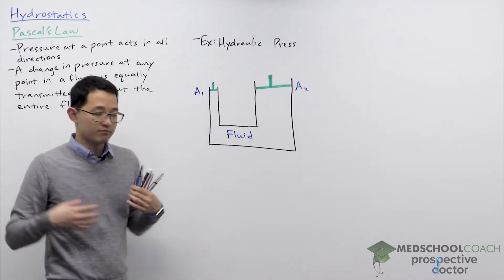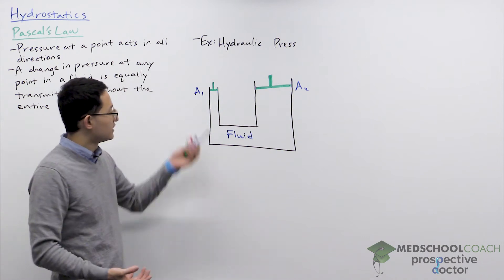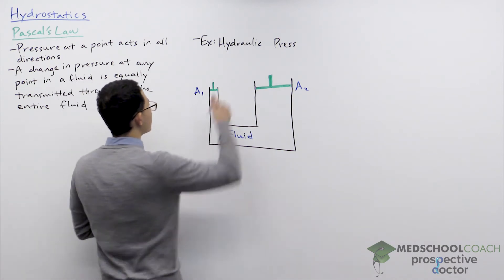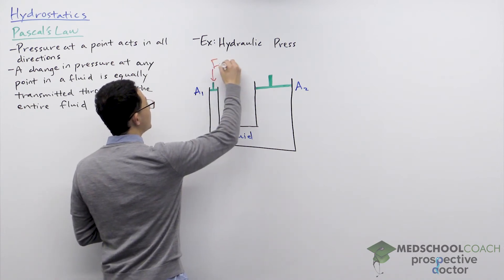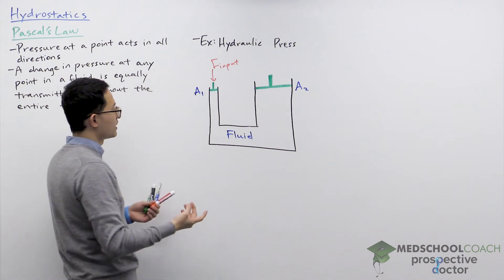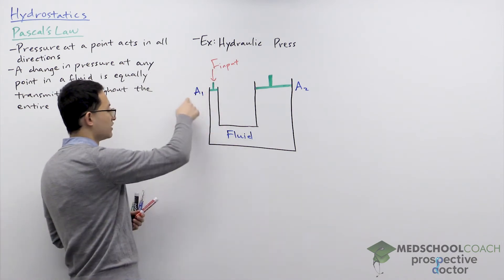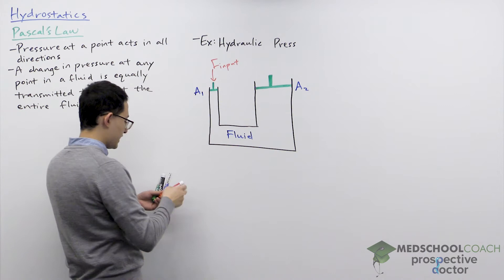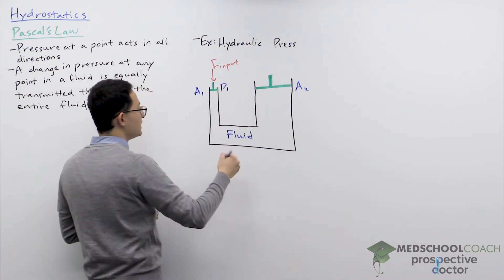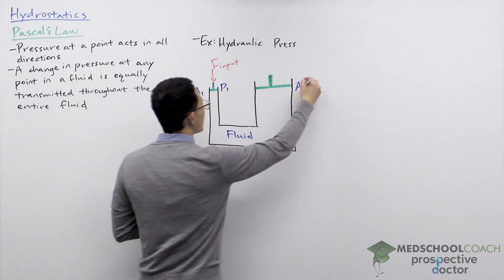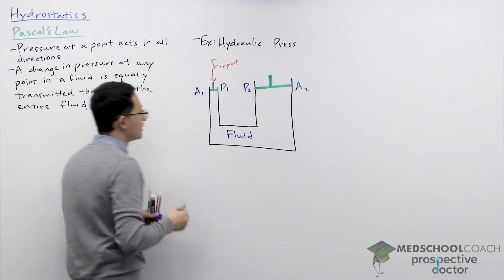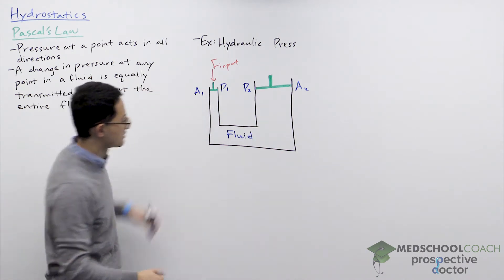And by Pascal's law the pressure is equally transmitted. So when someone essentially applies a force, so here is going to be the input force, it's going to introduce a pressure because this force is applied over this area. And whatever pressure that gets produced, P1, is going to be equal to the pressure at P2.